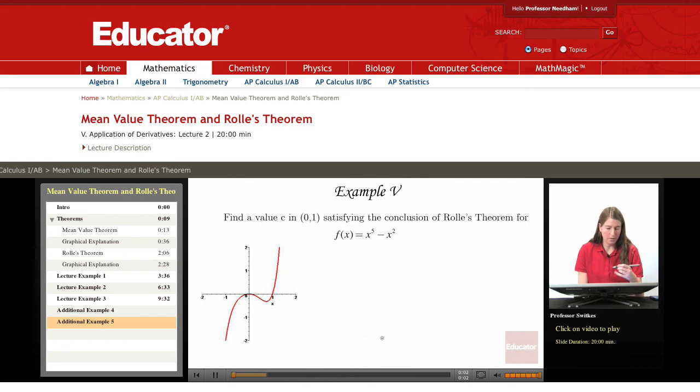We'll apply Rolle's theorem to this degree 5 polynomial x to the 5th minus x squared on the interval 0 to 1. Notice that f of 0 and f of 1 are both 0. This function satisfies the requirements for Rolle's theorem.